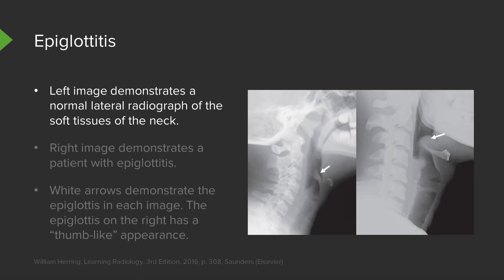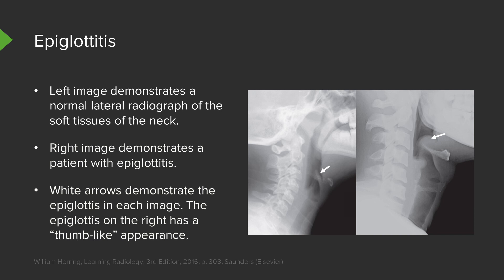This is most quickly diagnosed by a lateral radiograph of the neck. Here are two lateral images — the left image demonstrates a normal epiglottis pointed out by the arrow, and the right image is a patient with epiglottitis, also pointed out by the arrow. The epiglottis in the normal patient is a very thin structure, while in a patient with epiglottitis, it's a much thicker structure which can result in airway obstruction. In a patient with epiglottitis, the epiglottis has a thumb-like appearance.